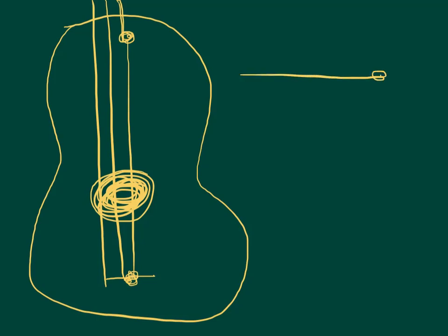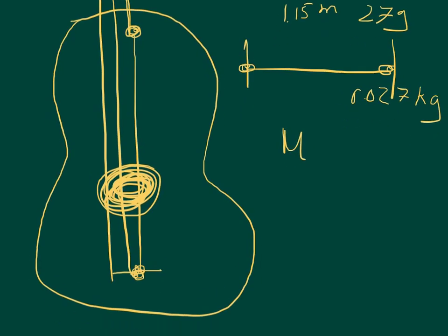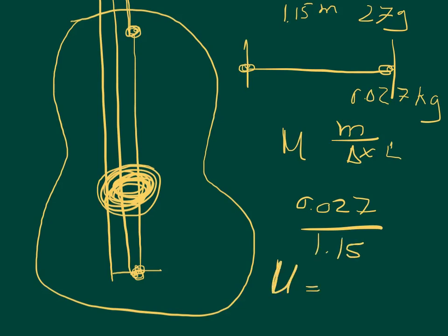For Part A, the problem gives us a length of 1.15 meters and a mass of 27 grams, which we convert to 0.027 kilograms. The linear density, represented by the Greek letter mu, is equal to mass over length — M over L. So we have 0.027 divided by 1.15, giving a linear density of 0.023478 kilograms per meter.